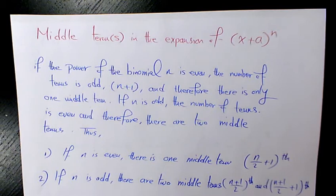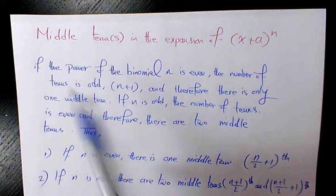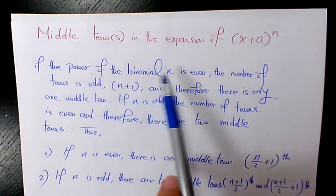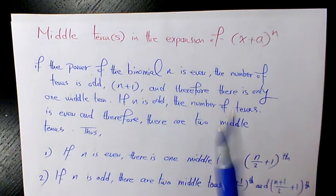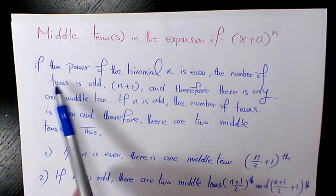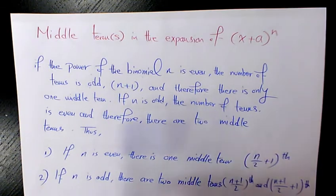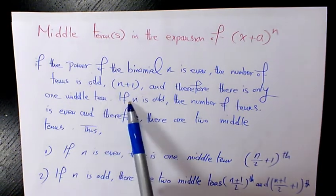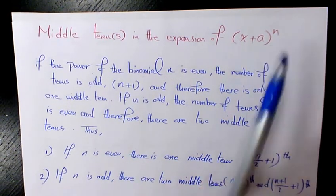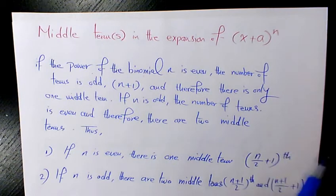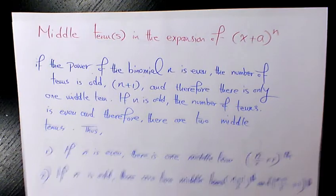We can call this finding the middle terms in binomial expansion. If the power or index of the binomial n is an even number, it means we have an odd number of terms — the number of terms is n plus 1 — and therefore there is only one middle term. If n is an odd number, then the number of terms n plus 1 is an even number, so in that case we're going to have two middle terms.